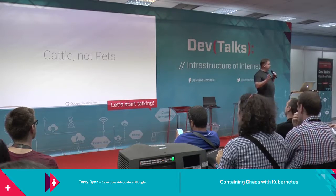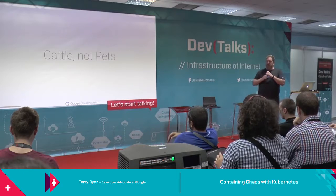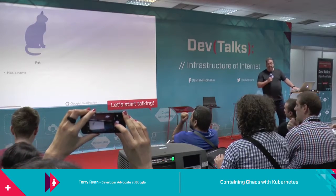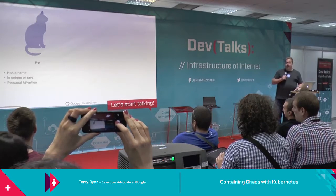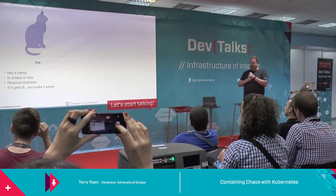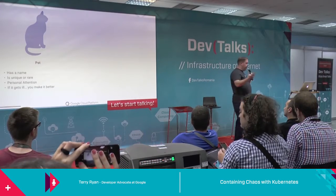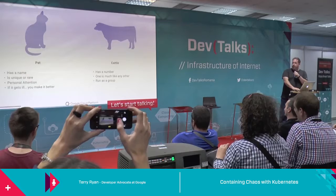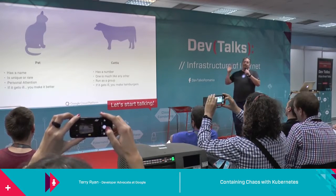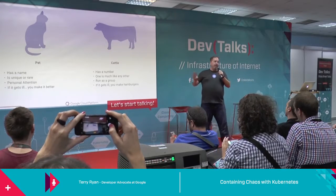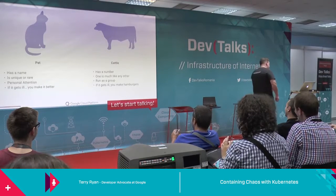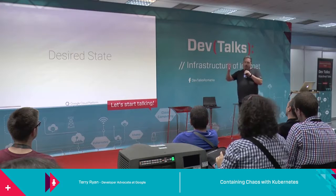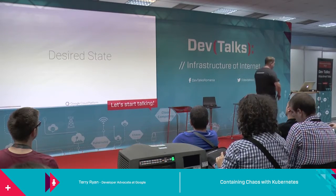Has anybody heard the metaphor of cattle, not pets? Cattle not pets says you should run your system like cattle and not like pets. A pet has a name, it is unique, it gets personal attention, and if it gets sick in the middle of the night you get a page and you're up all night. We all know those types of servers. Conversely, cattle has a number — one is pretty much like any other. You run them as a group, and if one gets sick, you make hamburgers. If one dies, we just want to reinstantiate it and move on, not worry about data that's on it — so we store data off them.